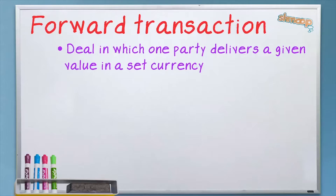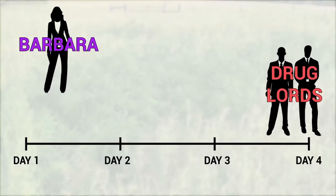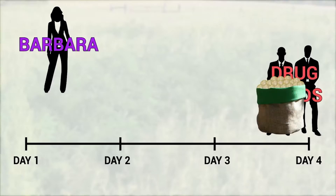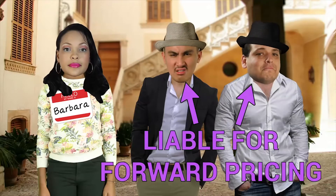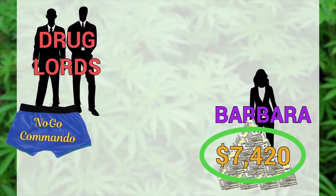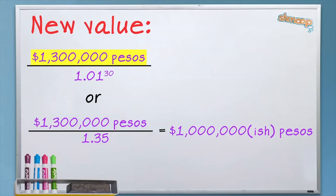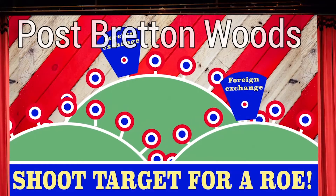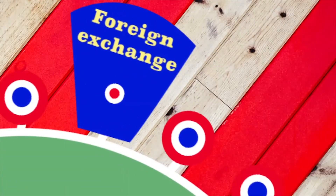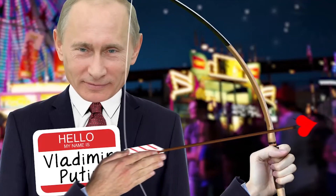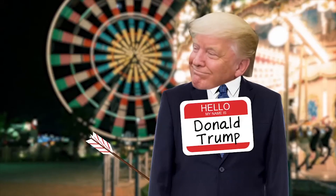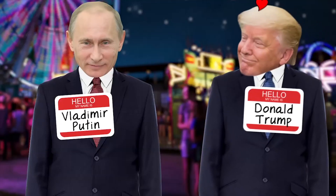The kissing cousin to a spot rate is a forward rate, or forward transaction. In this structure, a deal is cut such that in a set number of days, weeks, months, or whatever, one party delivers a given value in a set currency. Like you could have said: in 30 days, you will pay me $10,000 for this load of underwear. The drug lords would have been liable for the forward pricing — instead of the million pesos buying only $7,400 and change, they would have had to come up with something like 1.3 million pesos to buy $10,000 worth of underwear and pay their bill. That way, the buyer bears the risk of the currency, not the seller. The basic idea is that since Bretton Woods ended, foreign exchange will always be a moving target, and in order to not be destroyed by transactions where currency ratios go against you, you have to aim your arrows well in front of the direction the key currencies you care about are moving.